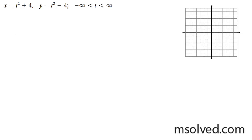We want to find the graph and then the rectangular equation for these two parametric equations. The thing you have to be careful about is the t squared here — any number less than zero is just going to take it right back up. So this equation, as opposed to a normal parametric equation, behaves differently because of that symmetry.